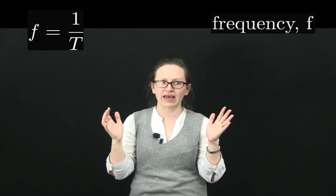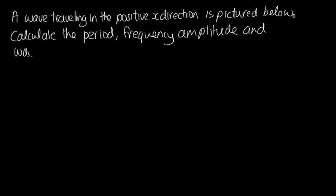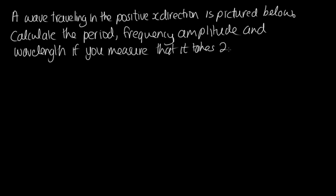So let's do an example now. So the question is, a wave travelling in the positive x direction is pictured below. Calculate the period, frequency, amplitude, and wavelength if you measure that it takes 2 seconds from when one crest passes you until the next crest passes you.